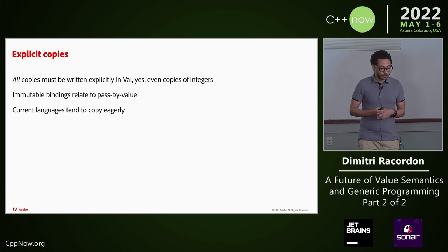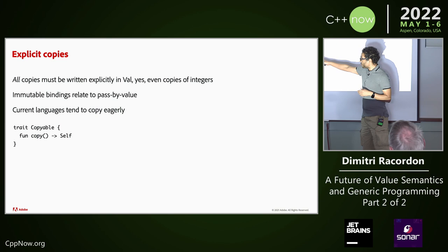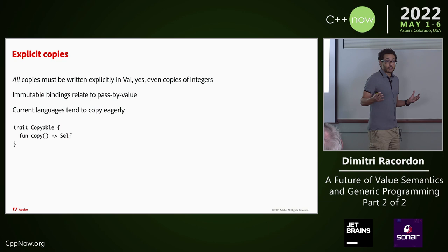The second observation is that current languages tend to copy too eagerly — this is something Dave said on Monday. When we use pass-by-value in a language like C++, Swift, or Rust, the language tends to make a copy very eagerly. Maybe there's a way to delay that copy. Swift uses copy-on-write, and we try to explore a different approach. Copyability in VAL is just a single trait — like a Swift protocol — with a single requirement for that copy method. This is not a constructor. When you need to copy something, you just call that method.